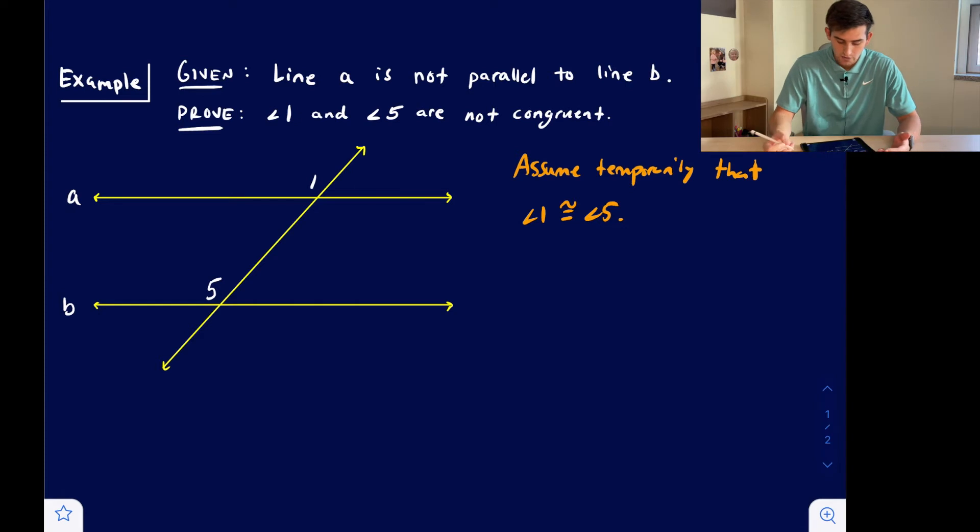Okay, so if we do that, now if angle 1 and angle 5 are congruent, those two angles are called corresponding angles.